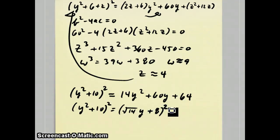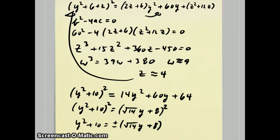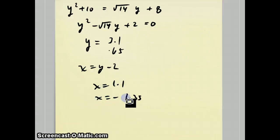And now, you can take the square root of both sides and get y² + 10 equals plus or minus √14y + 8. Now, I'm just going to use the positive one on the right, because that becomes this quadratic equation, y² - √14y + 2 = 0. And when you run that one through the quadratic formula, you get two answers, y equals 3.1 and y equals 0.65. But remember from the beginning, that x = y - 2, which means x = 1.1 and x = -1.35. Done.